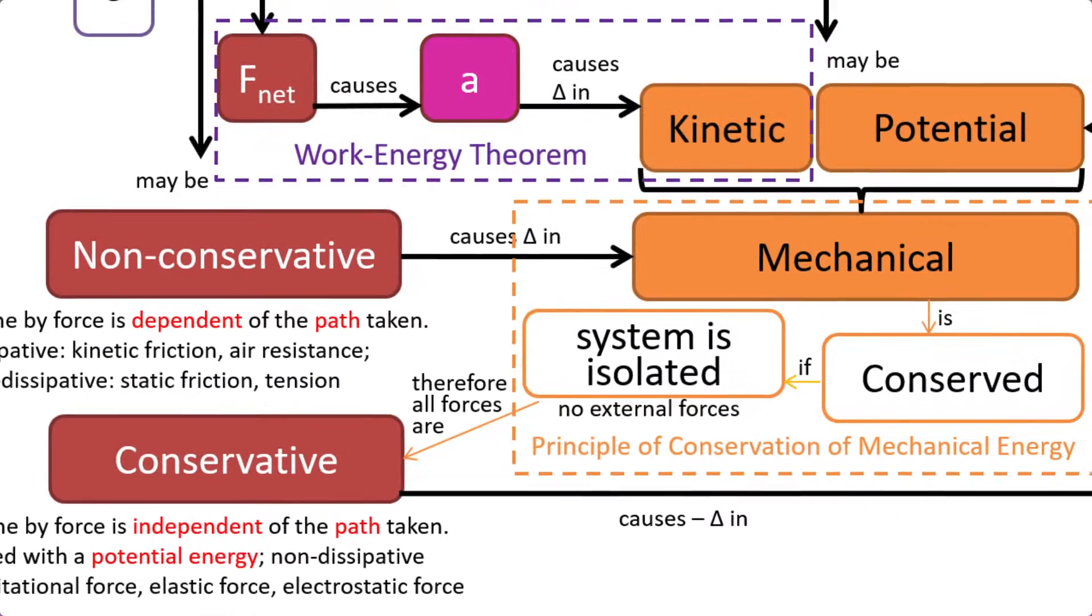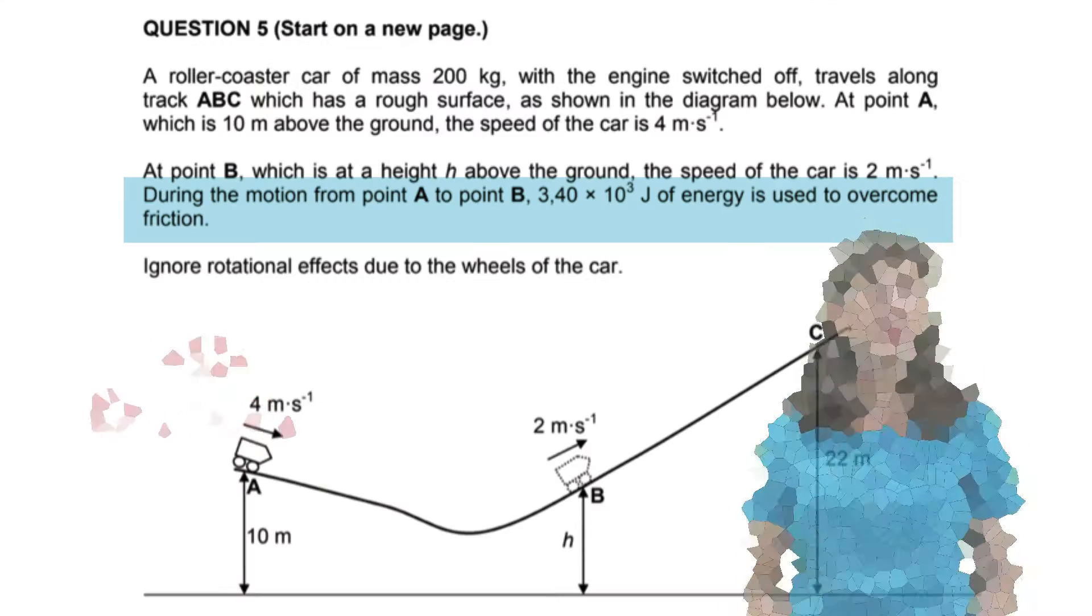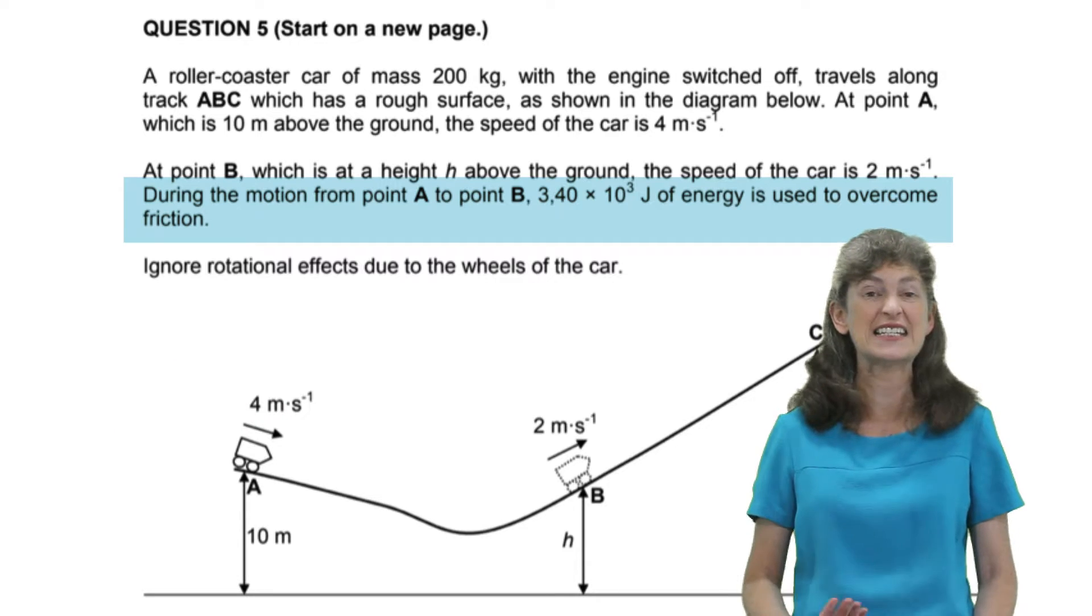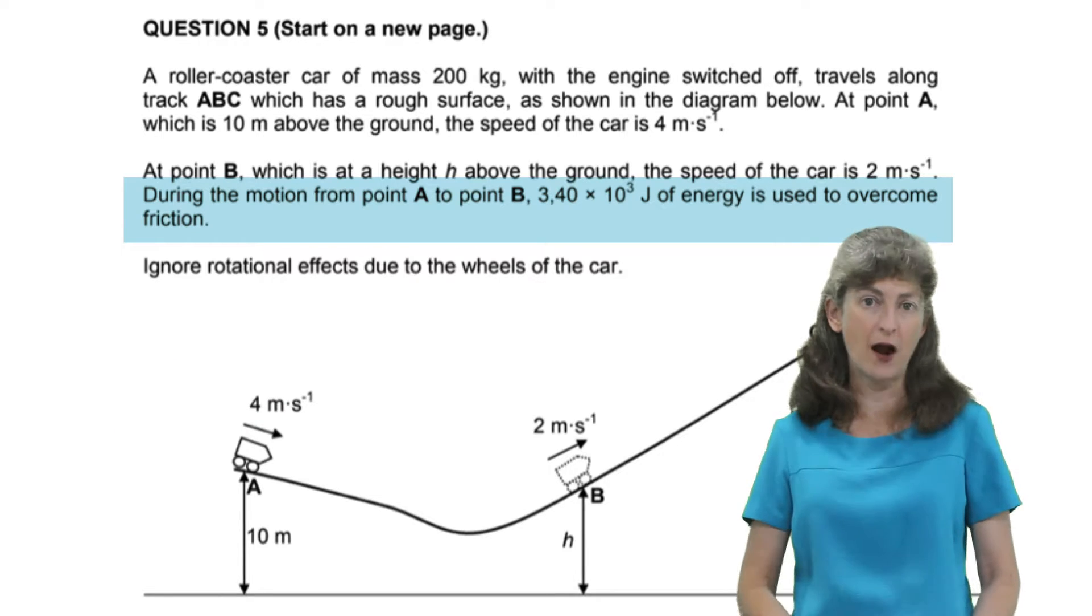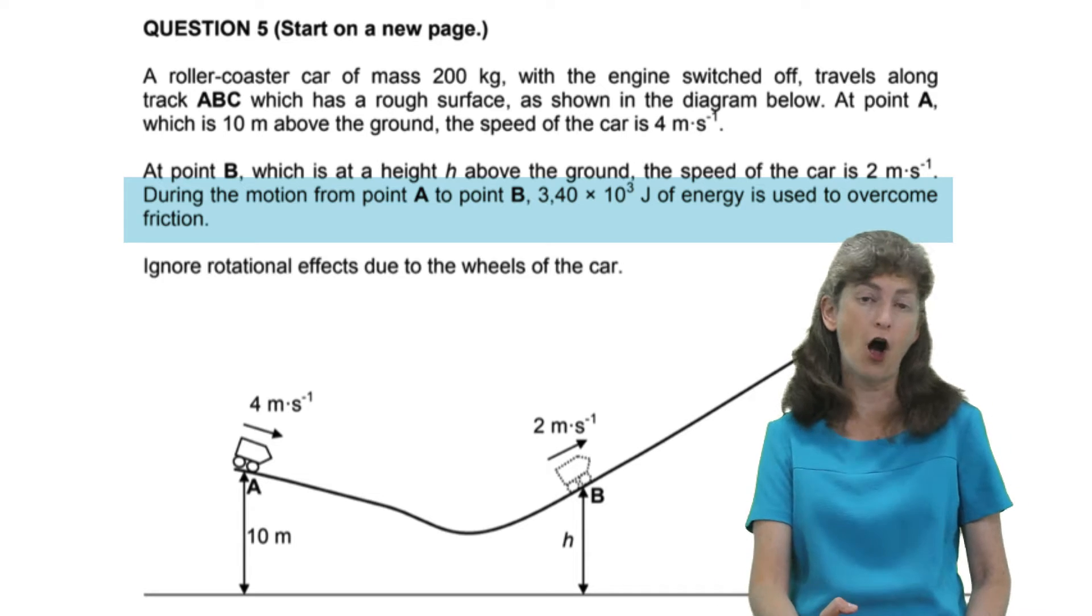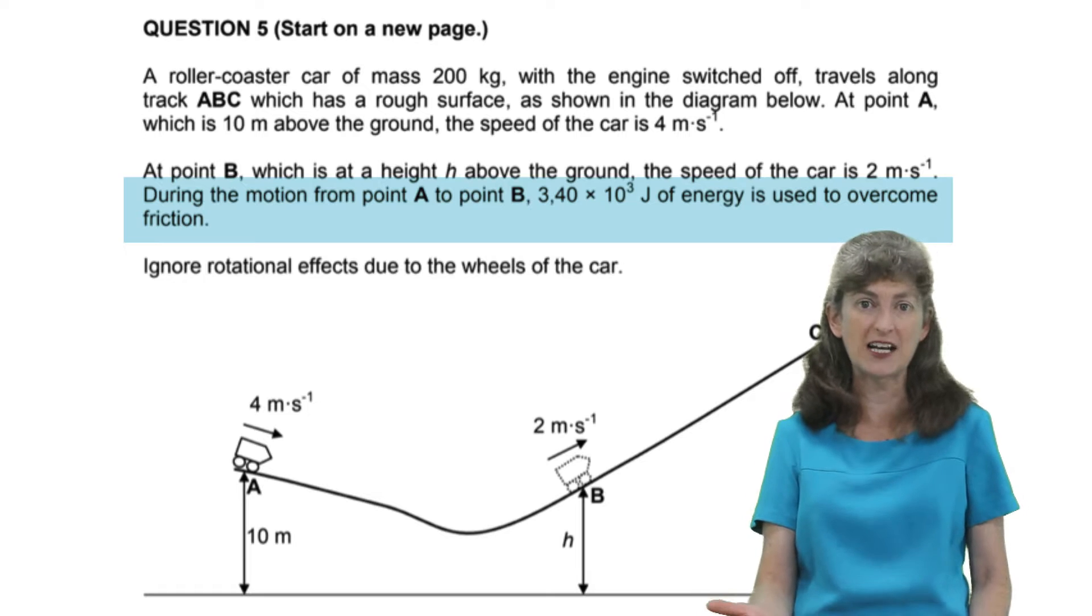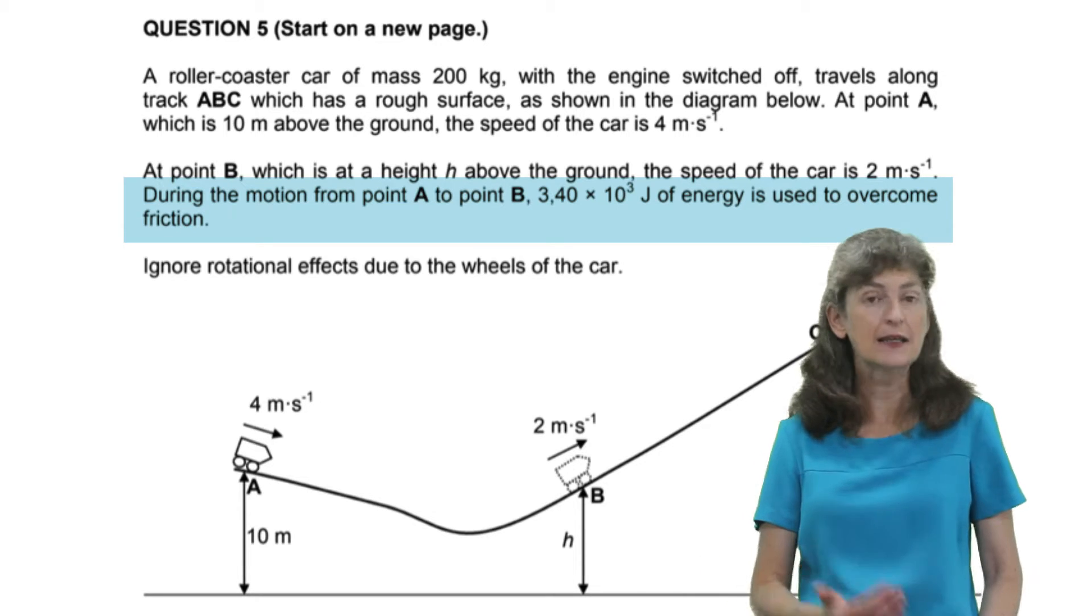Non-conservative forces cause changes in mechanical energy. Friction is an example of a non-conservative force. It's a dissipative non-conservative force and we're told here how much energy it dissipates to the environment. In other words, it takes that energy out of the car and converts it into diffuse forms of energy like heat and sound in the environment.